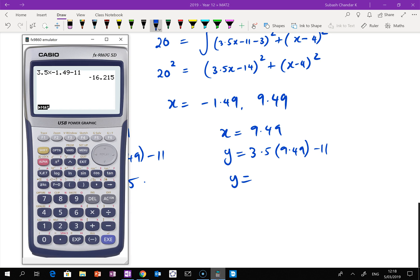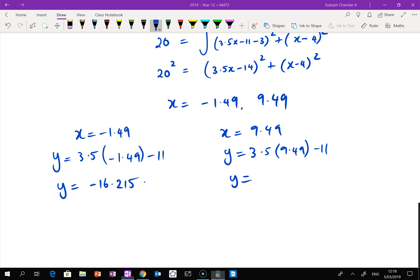And for the second one, you're going to get 3.5 times 9.49 minus 11, which is 22.215. So the two points B could potentially move to are (negative 1.49, negative 16.215) or (9.49, 22.215). So those are the two points where B could potentially move to so that the distance is actually equal to 20.